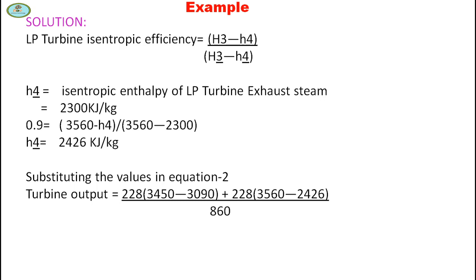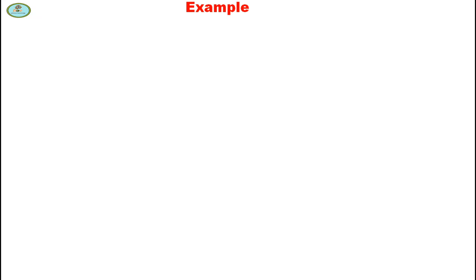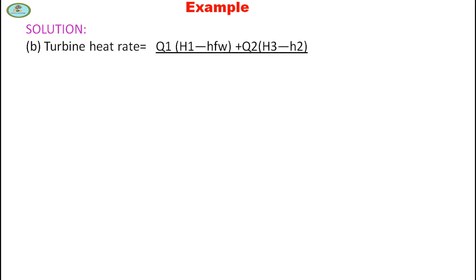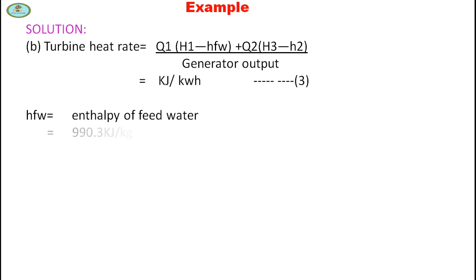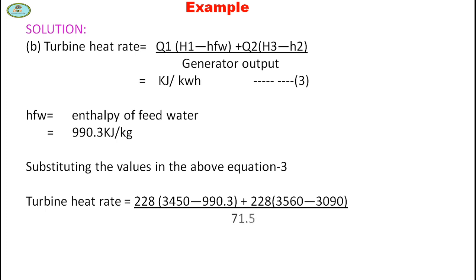Substituting all values, power output equals 75.73 MW, and with generator efficiency of 0.95, the generator output is 71.5 MW. For turbine heat rate: heat rate = [Q1 × (H1 − Hfw) + Q2 × (H3 − H2)] / generator output = [228 × (3450 − 990.3) + 228 × (3560 − 3090)] / 71.5. Turbine heat rate equals 9342 kJ/kWh.